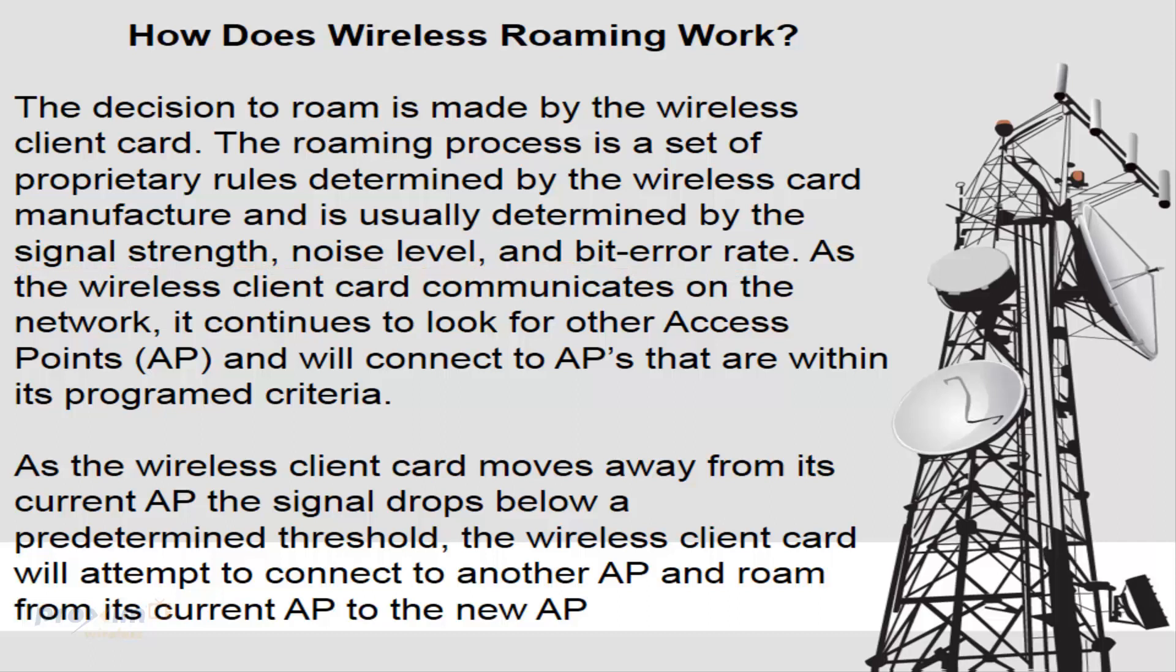As the wireless client card communicates on the network, it continues to look for other access points and will connect to APs that are within its programmed criteria. As the wireless client card moves away from its current AP, the signal will drop below a predetermined threshold. The wireless client card will attempt to connect to another AP and roam from its current AP to the new AP.